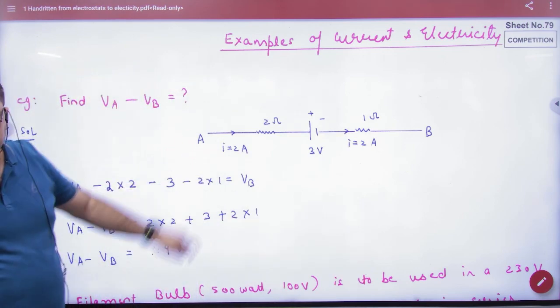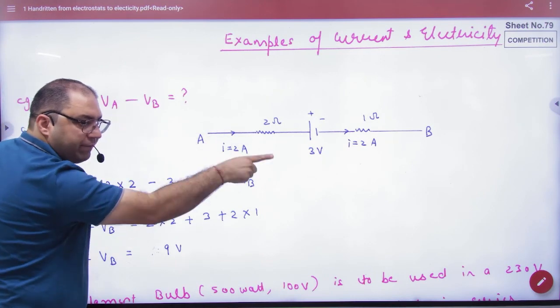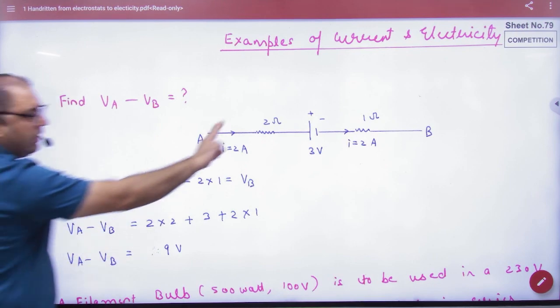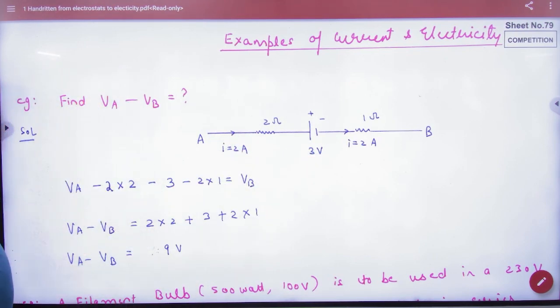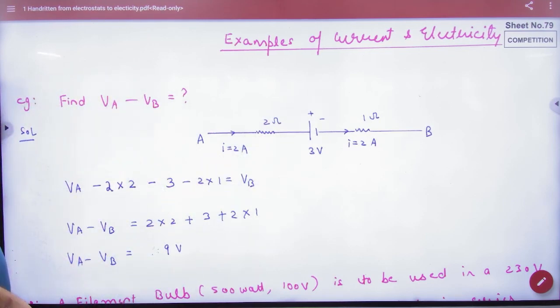So you start with the higher potential, VA. Current is going in the direction toward VB, so minus 2 into 2. Then battery is going plus and minus, then minus 3. Then current going in the direction, minus 1 into 2, equal to VB.